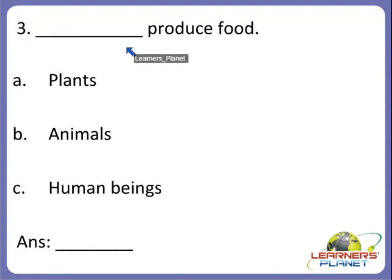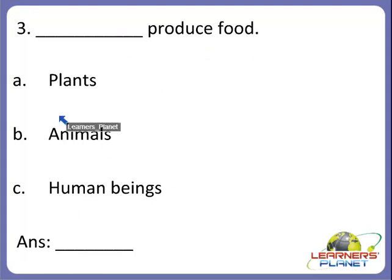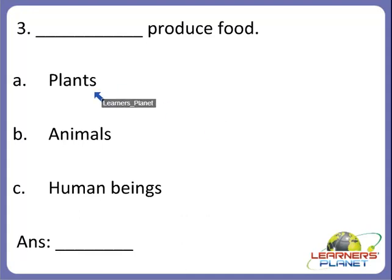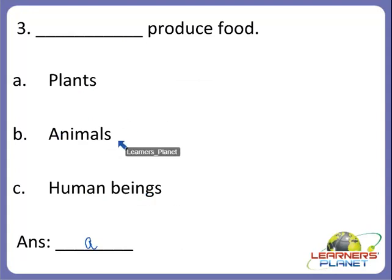Now the next one: dash produce food. What produces food? Is it A. plants, B. animals, or C. human beings? Yes — plants. Plants produce food on their own, so A is the correct answer. Animals cannot prepare food on their own, so they depend upon plants and other animals. And human beings depend upon plants and animals.